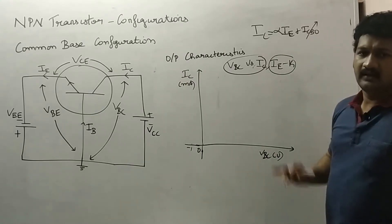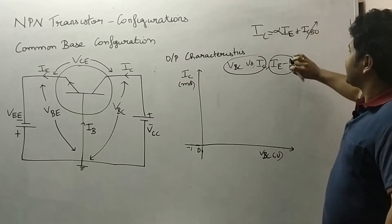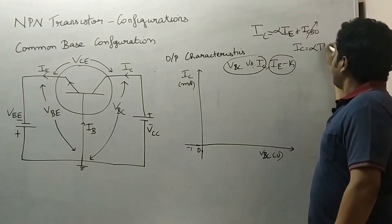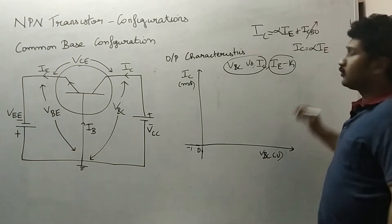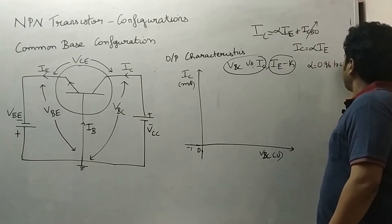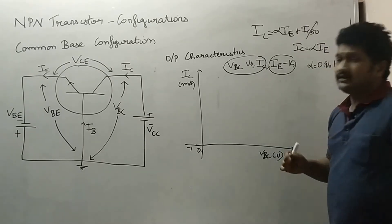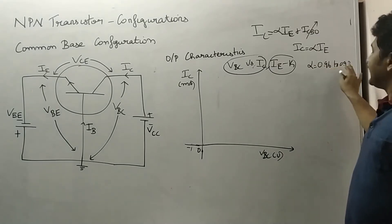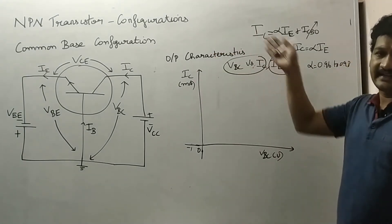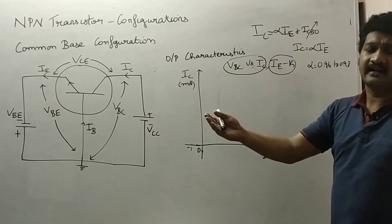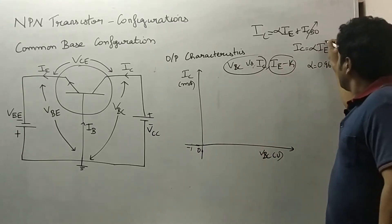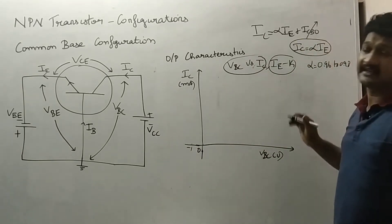This reverse saturation current can be neglected, so IC will be equal to alpha IE. Alpha equals 0.96 to 0.98, which means 96 to 98 percent of the electrons from the emitter region reaches the collector region. The proportional collector current will be produced. This is the meaning for this expression IC equal to alpha IE.